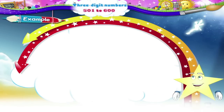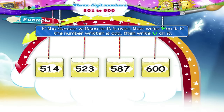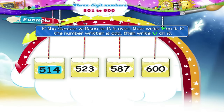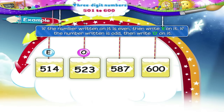In the next example, take a look at the flashcards. If the number written on it is even, then write E on it. If the number written is odd, then write O on it. The first flashcard has the number 514. It has the digit 4 in the units place, so it is an even number. Let us write E on the card. The next number is 523. Is it odd or even? 523 is an odd number since the units place digit is 3.